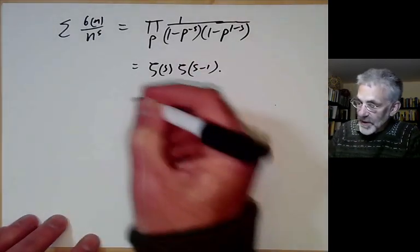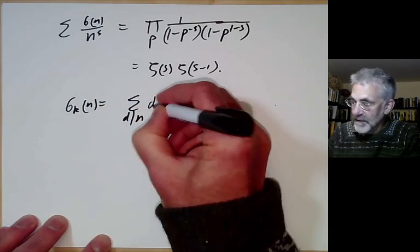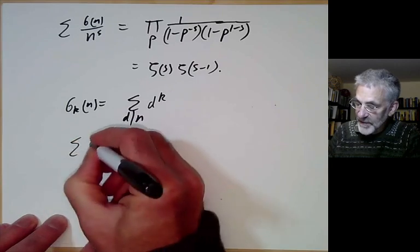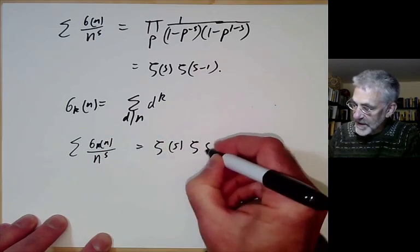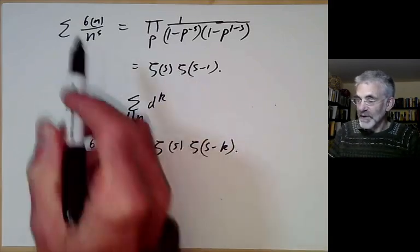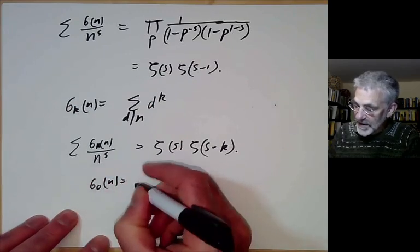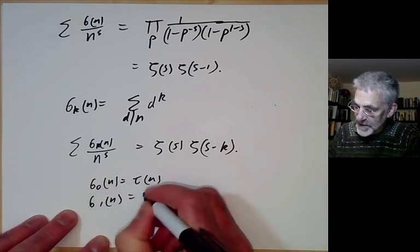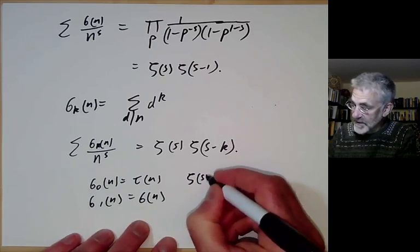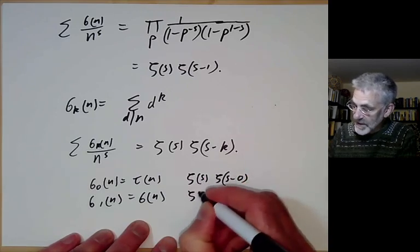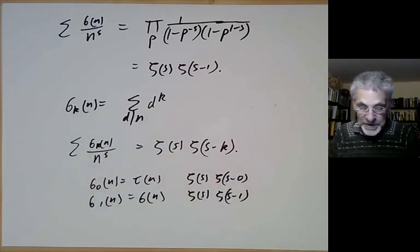More generally, if we define σ_k(n) = Σ_{d|n} d^k, then Σ σ_k(n)/n^s = ζ(s)·ζ(s−k). The proof is very similar. Note that σ_0(n) is the number of divisors (giving ζ(s)²) and σ_1(n) is the sum of divisors (giving ζ(s)·ζ(s−1)), so those two results are special cases of this more general formula.